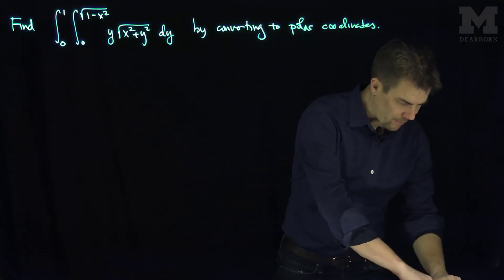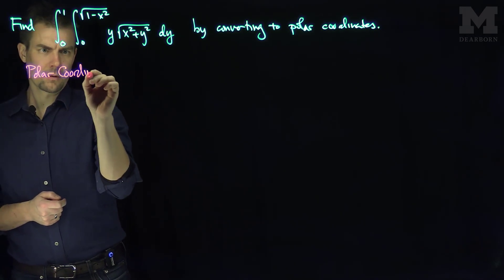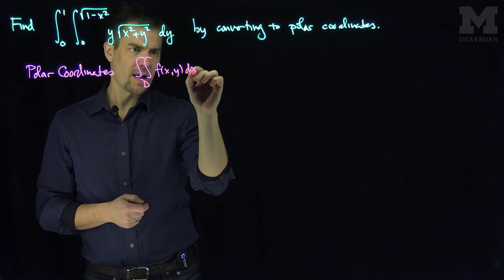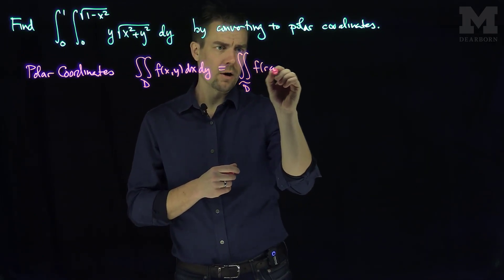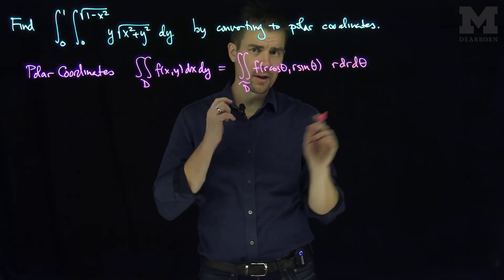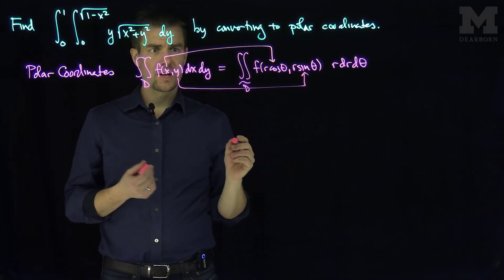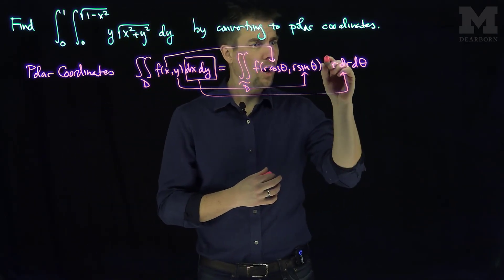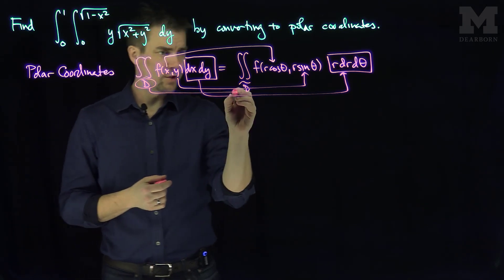We recall that the polar coordinate transformation does several things. Polar coordinates asserts the double integral over region d of f(x,y) dx dy is equal to the double integral over another region d-tilde, a polar region, of f(r cosine theta, r sine theta) times r dr d theta. So three things change when you convert to polar coordinates: the x's turn into r cosine thetas, the y's turn into r sine thetas, the area element dA — the dx dy — turns into r dr d theta, sector area. And finally, the limits of integration will change from d to d-tilde.